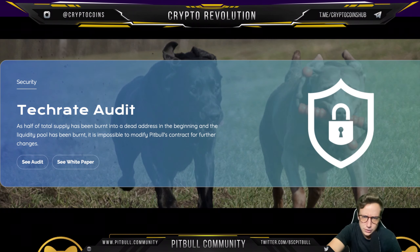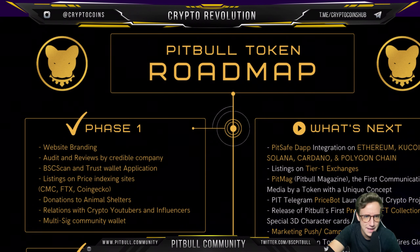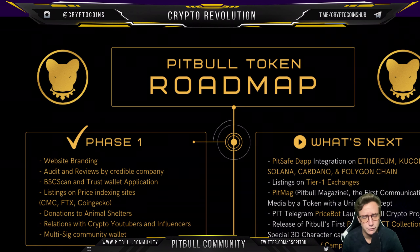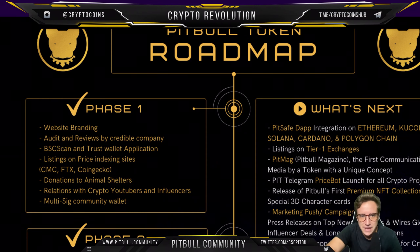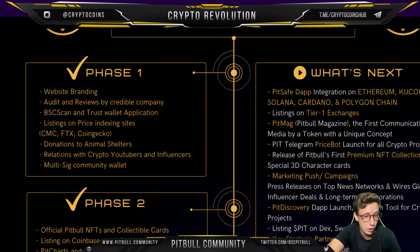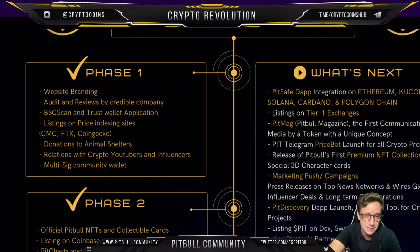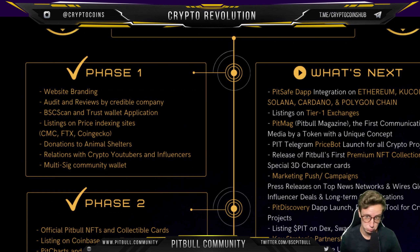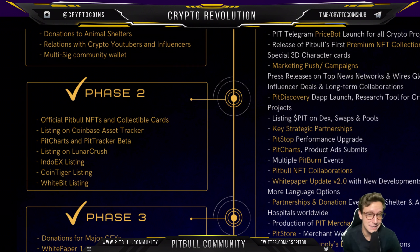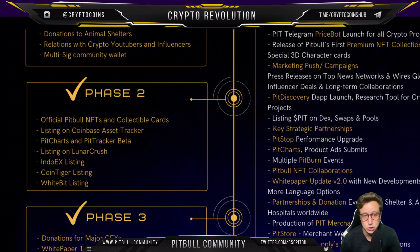Pitbull donates to animal shelters and vets, which is a really kind thing for a coin to do. Their roadmap Phase 1 includes website branding, audits and reviews, BSC Scan and Trust Wallet application, listings on price indexing sites like CoinMarketCap and CoinGecko, donations to animal shelters, relations with crypto YouTubers and influencers, and a multi-sig community wallet. Phase 2 includes official Pitbull NFTs and collectible cards.